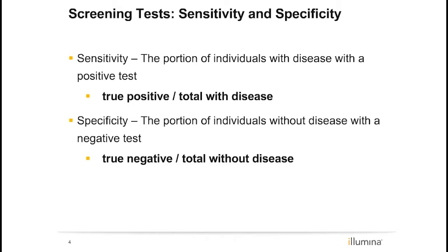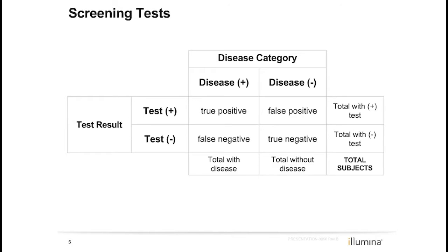If you subtract a test's sensitivity from 100%, that equals the percent of false negatives. If you subtract a test's specificity from 100%, that equals the percent of false positives. A helpful 2x2 table can make these calculations clearer: the two columns represent patients with and without a disease, and the two rows represent positive and negative test results.